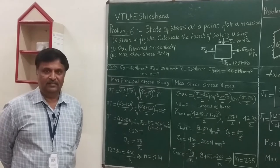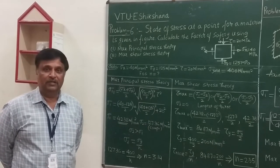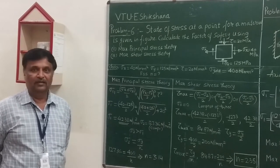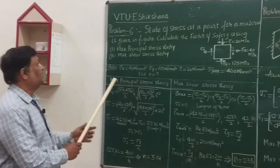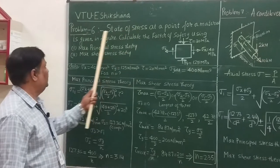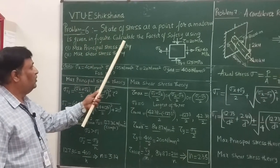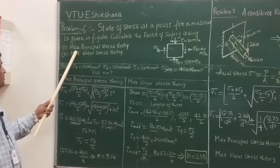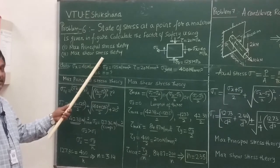In the previous lectures you have seen the concepts of theories of failure. Today we will solve two important problems on theories of failure. Let me go through the problem first. The state of stress at a point for a material is given in the figure. Calculate the factor of safety using the two important theories: maximum principal stress theory and maximum shear stress theory.